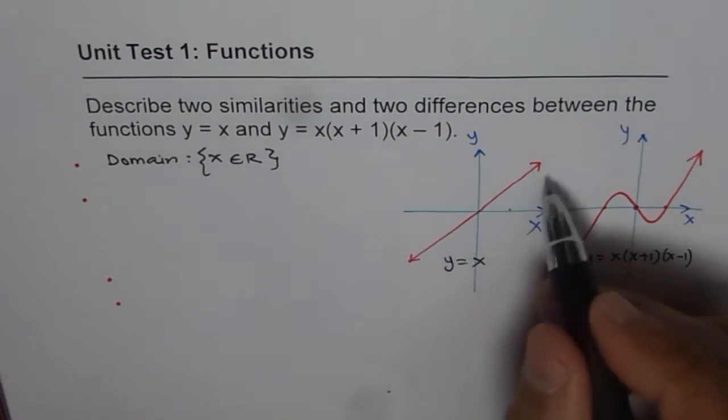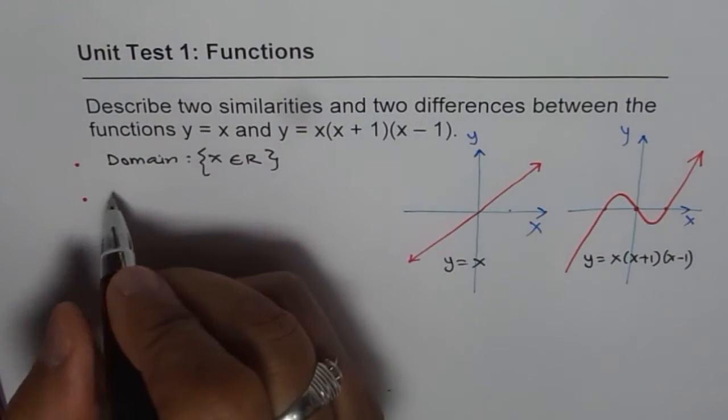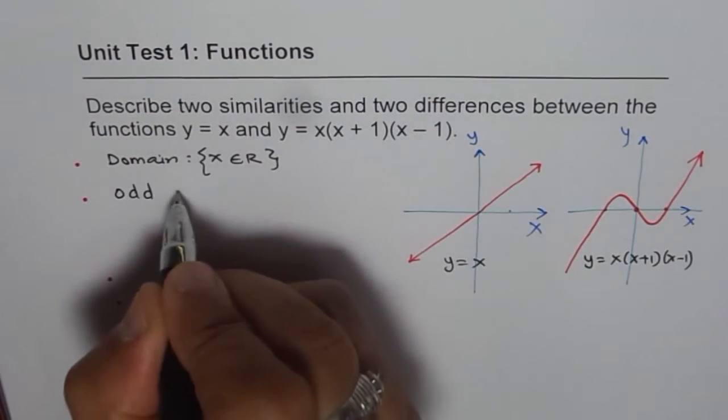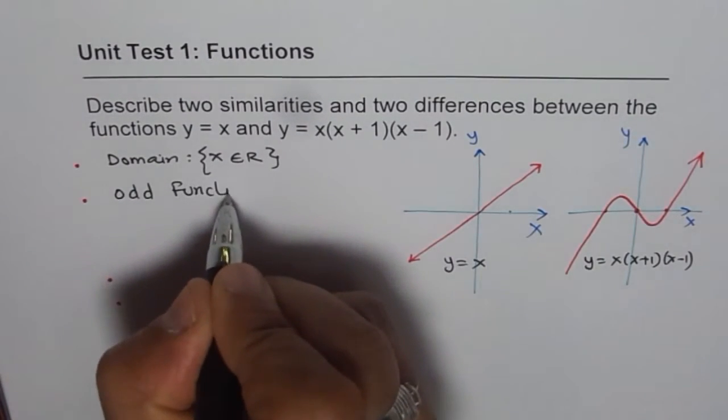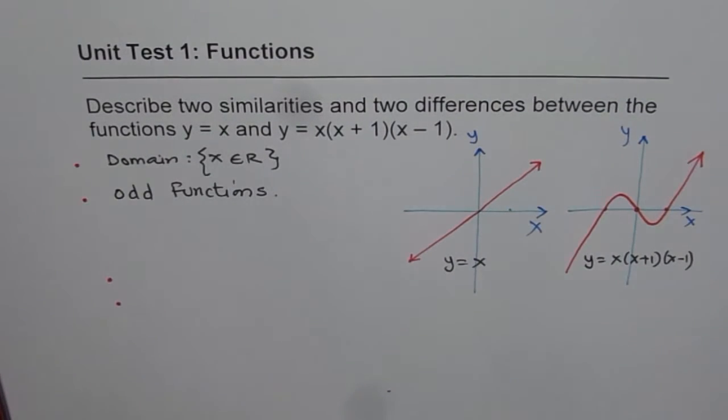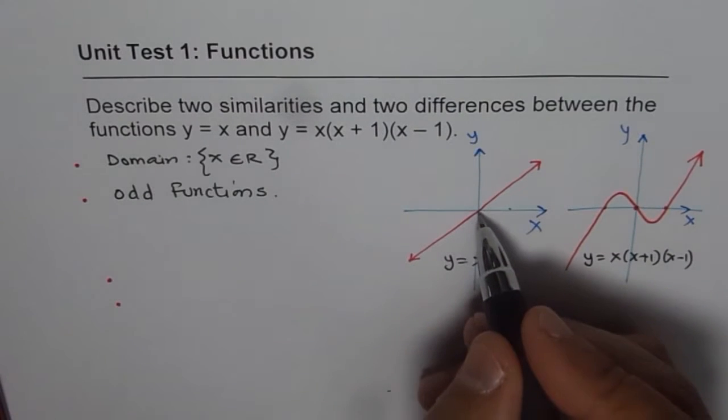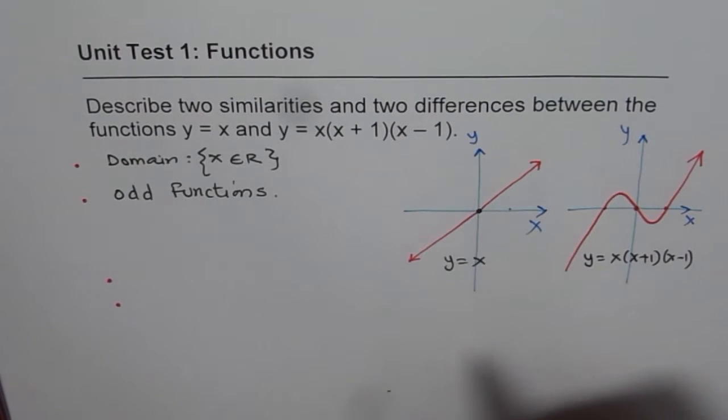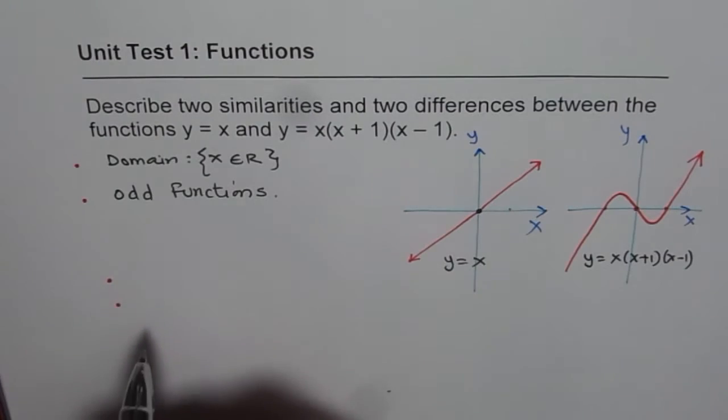Another good similarity between the two is that both are odd functions. These are similarities between them. Odd means they are symmetric about origin, point of orientation is there. So they have a rotational symmetry around origin.